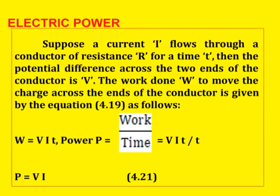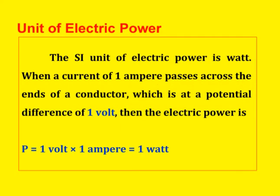Next, electric power. Current I flows through a conductor of resistance R for a time T, and the potential difference across the two ends of the conductor is V. The work done W to move the charge across the ends of the conductor is W = VIT. Power P = work / time. The formula is P = V × I. The SI unit of electric power is watt. So, P = 1 volt × 1 ampere = 1 watt.